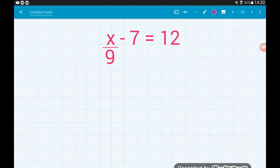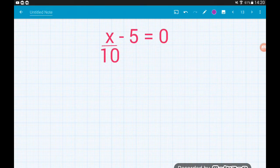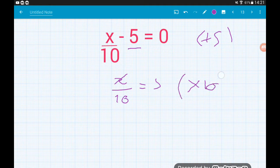x over 9 minus 7 equals 12. So let's sort out 7. We're going to add 7. That gives us x over 9. Now 12 add 7 is 19. Then we need to multiply 19 by 9, which gives us x equals 171. Next: x over 10 minus 5 equals 0. Let's add 5. We get x over 10 equals 5. Multiply by 10 and we get x equals 50. Job's a good'un.